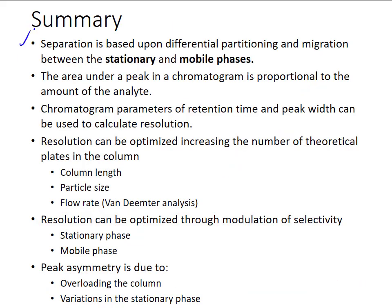To summarize: separation is based upon differential partitioning and migration between stationary and mobile phases. The area under a peak is proportional to the amount of analyte present. Resolution can be optimized by increasing the number of theoretical plates — through increasing column length, decreasing particle size, and optimizing flow rate via Van Deemter analysis. Resolution can also be optimized through modulation of selectivity by choosing a different stationary or mobile phase. Finally, peak asymmetry — due to either column overloading or variations in stationary phase composition — can be minimized through mobile phase additives or changing the stationary phase.